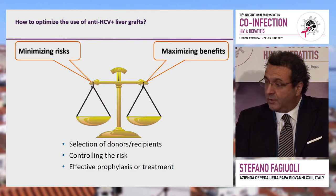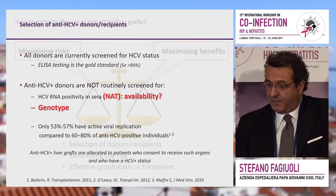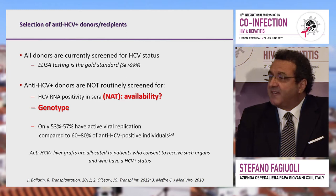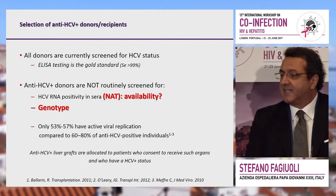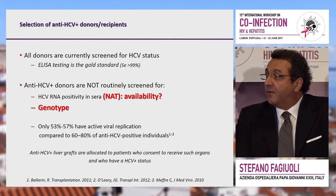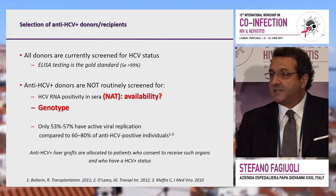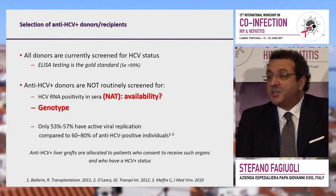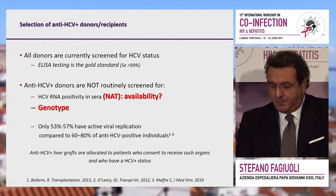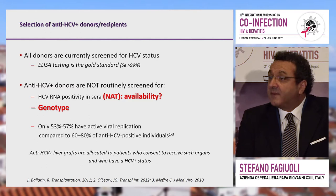You have to minimize the risk and maximize the benefit through proper selection of donor and recipient, controlling the risk and doing proper treatment. All donors are screened for HCV status with ELISA testing, but that's not exactly what we need, because only 50 to 60% of donors are actually replicating — about 20 to 25% less than we see in the general population. We should do NAT testing to get a quick response when the procurement agency signals the donor.